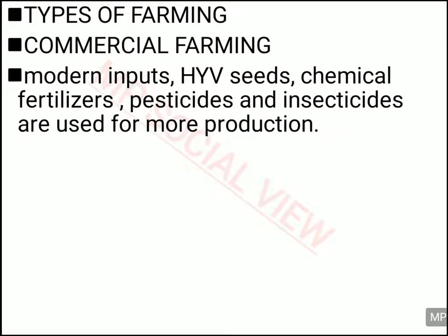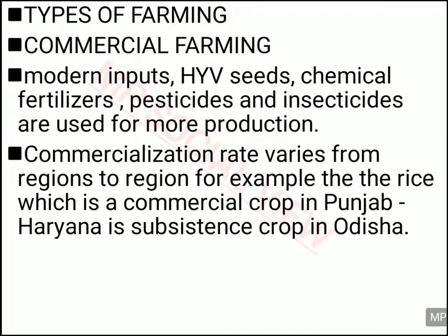Now we are going to see the third type of farming and that is commercial farming. In commercial farming we actually use modern methods — modern inputs, high yield variety seeds, chemical fertilizers, pesticides, insecticides, and new modern irrigation methods — all to increase production. The level of commercialization is different in different places. For example, rice is cultivated at a commercial level in Punjab and Haryana, while the same rice is cultivated as a subsistence crop in Odisha.